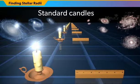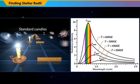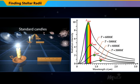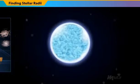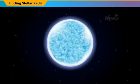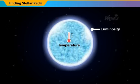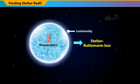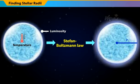Standard candles can be used to determine the luminosity L of a star. In addition, we can measure changes in the wavelength of the intensity of the radiation emitted by a star, and therefore find the wavelength lambda max that leads to the maximum intensity. Hence, by substituting the values of luminosity L and surface temperature T in the Stefan-Boltzmann Law, we can obtain the estimated value for the radius of a star.